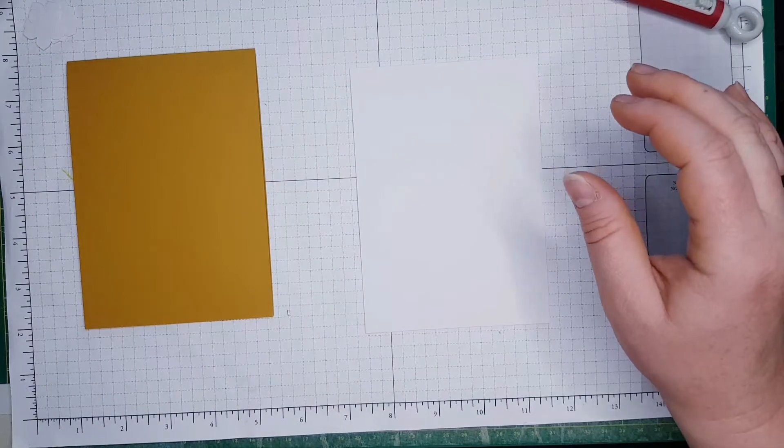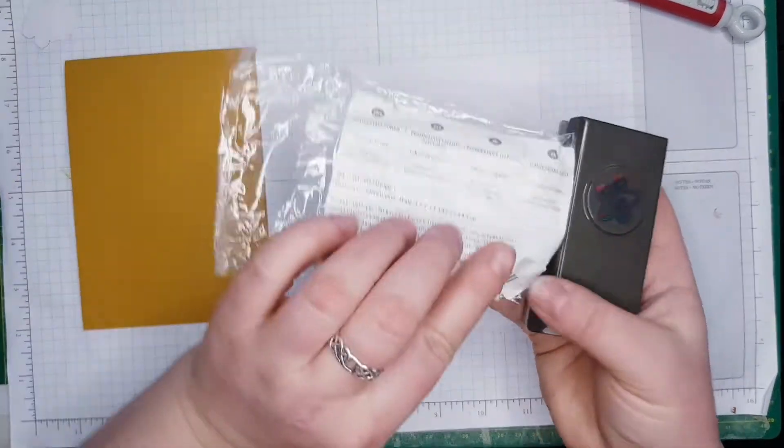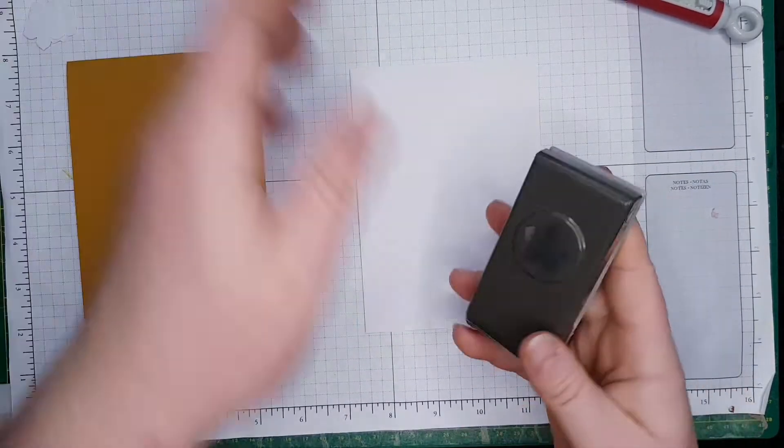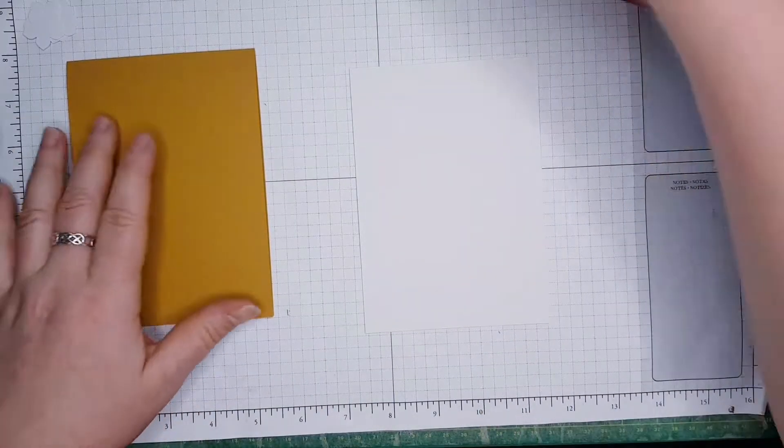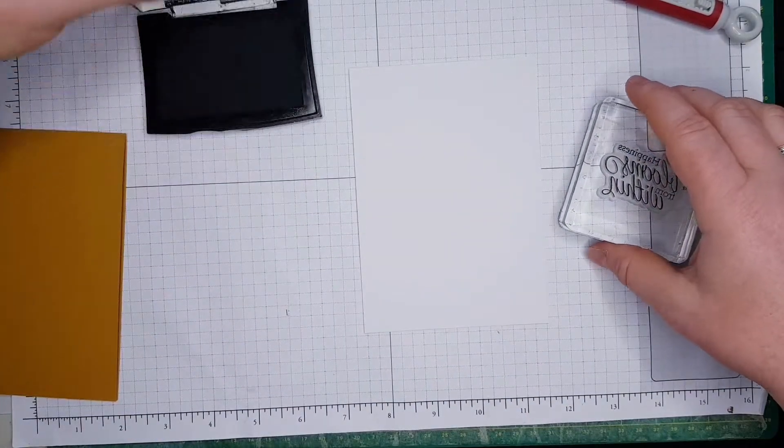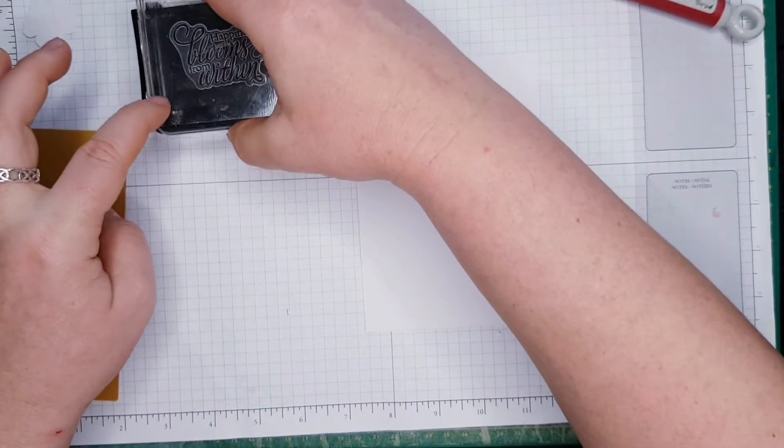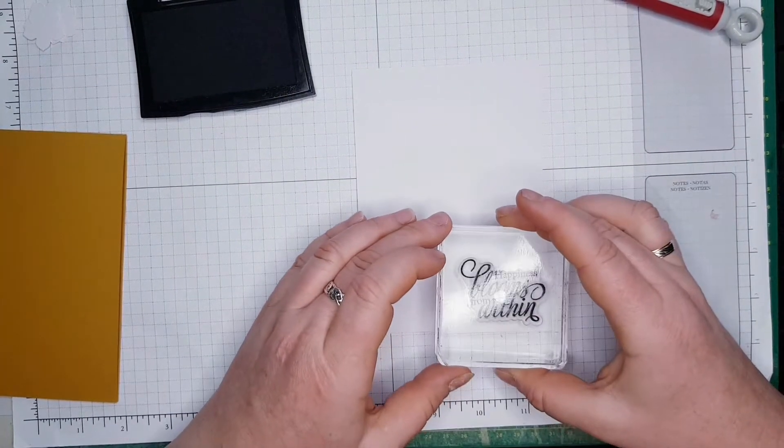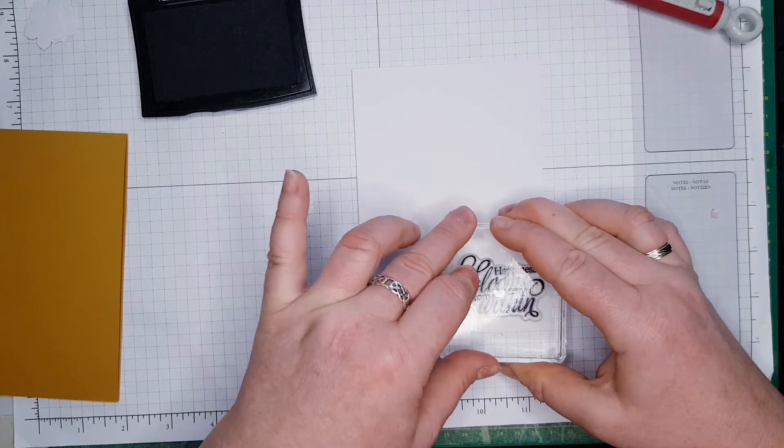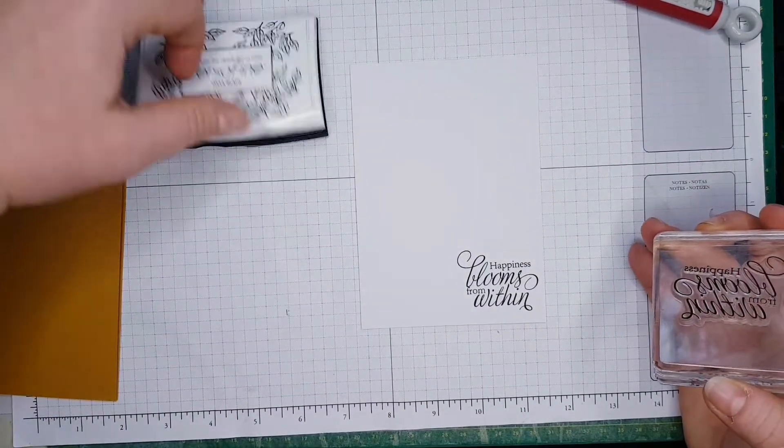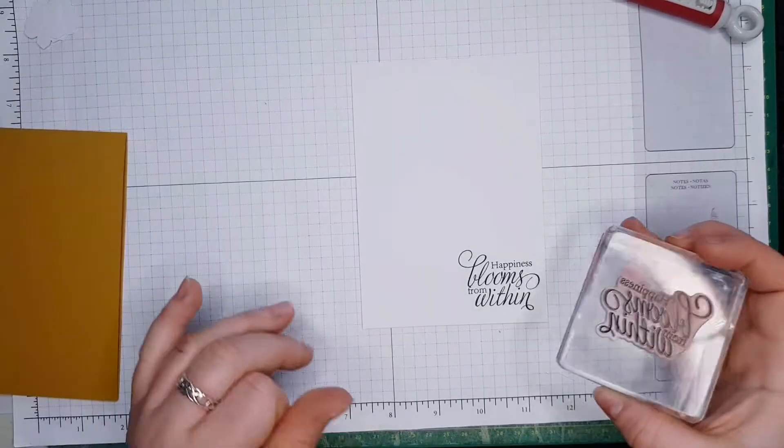It's this 'Happiness Blossom From Within' because it's flowers. I'm going to use Stampin' Up Petit Petal punch and Versafine black to stamp it. I'm going to start with black ink to stamp the sentiment only.